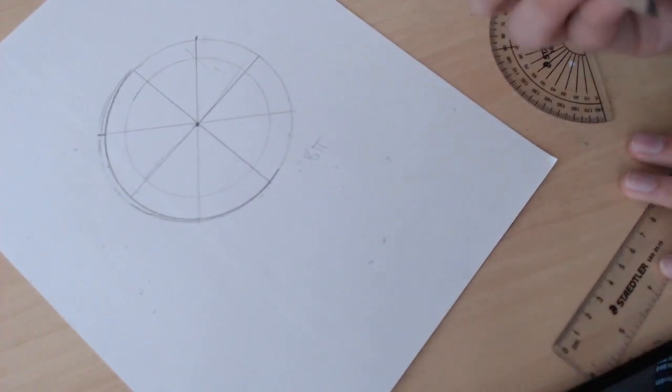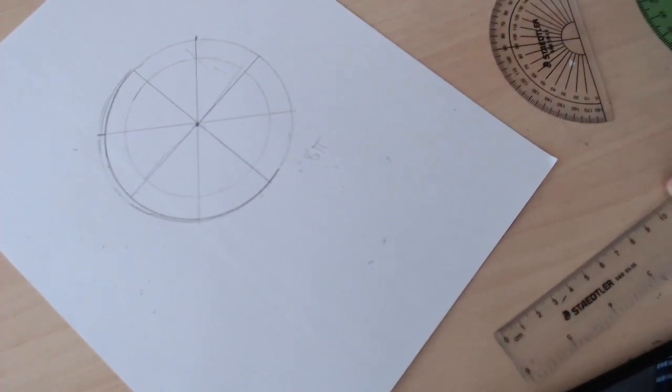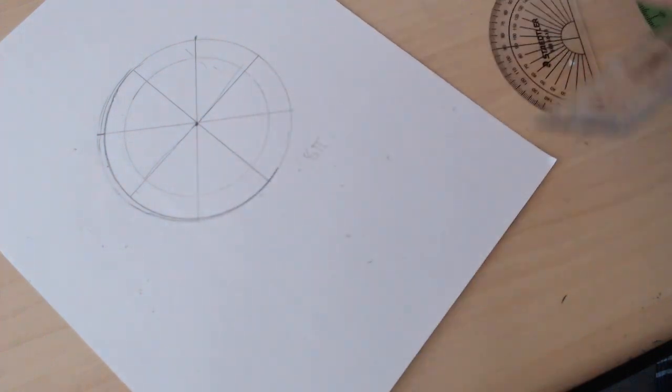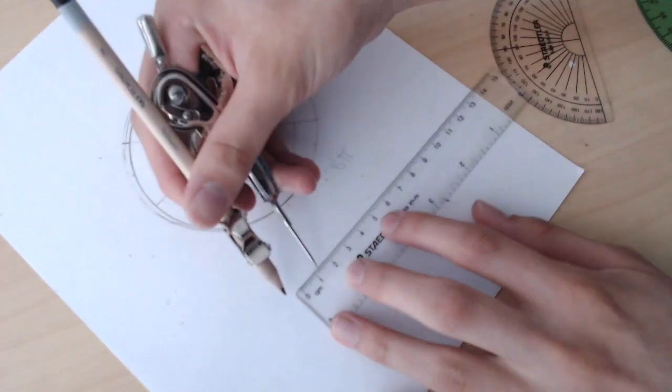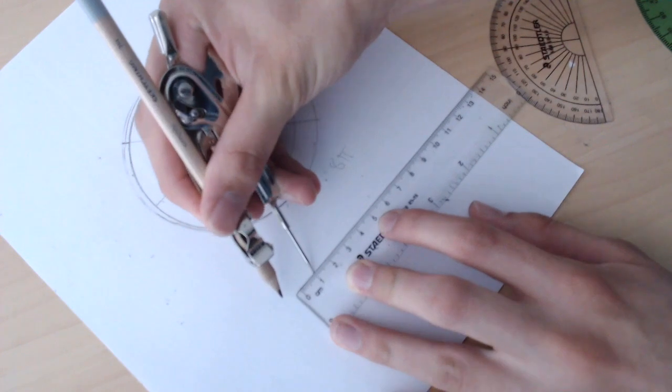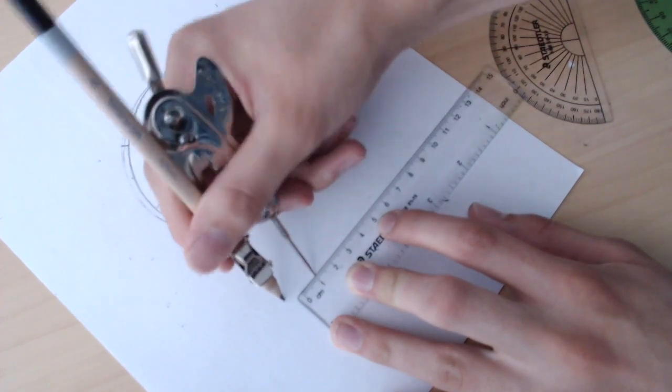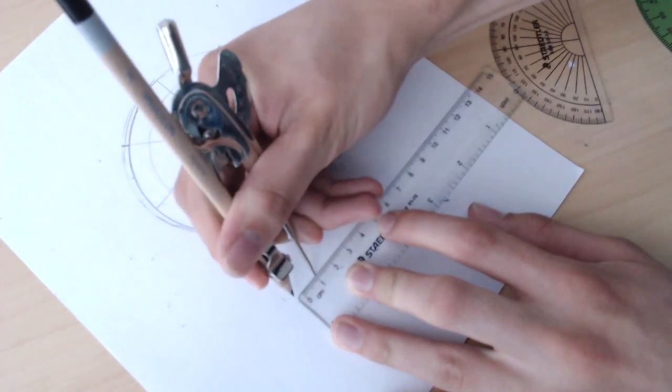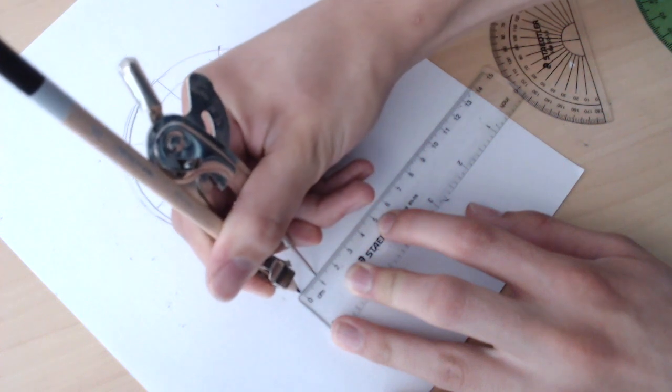So as we mentioned before, our teeth are going to be 1.04 centimeters wide which we have chosen to round to one centimeter. So how we're actually going to mark this out is get back the compass and mark it out at one centimeter.